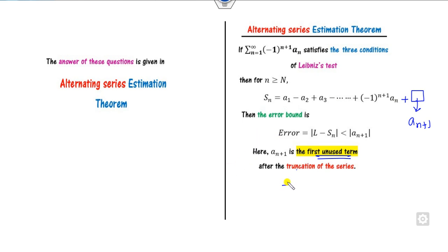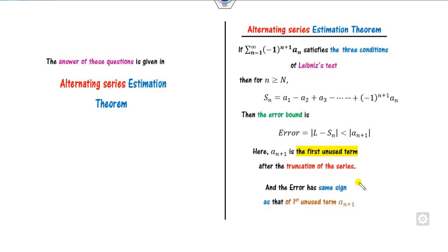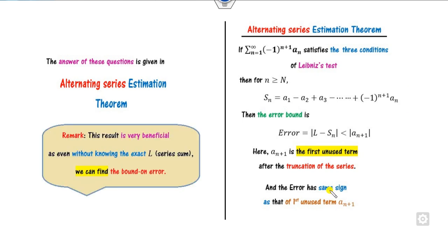The second question is what is the nature of the error — whether it is positive or negative — and that depends upon the sign of a_{n+1}: whatever the sign of the next unused term, either plus or minus, if it is plus then the error will have a positive sign. Remember this result is very beneficial because without knowing the exact value of the sum of the series we can find the bound of the error.